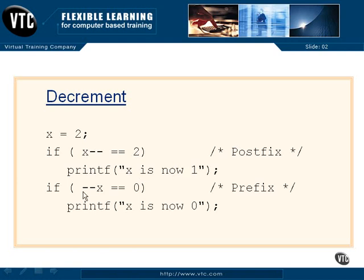If we now do a prefix decrement, minus minus x equals 0, we decrement first. x is 1. We decrement it again before the comparison. Now it is in fact 0. This will be true, and we will say that x is now 0.